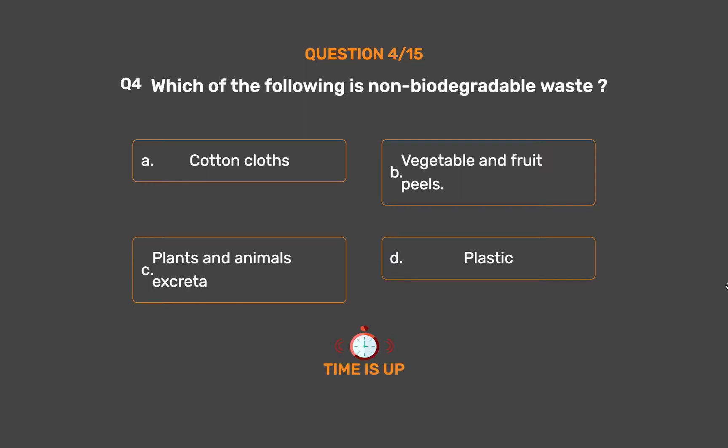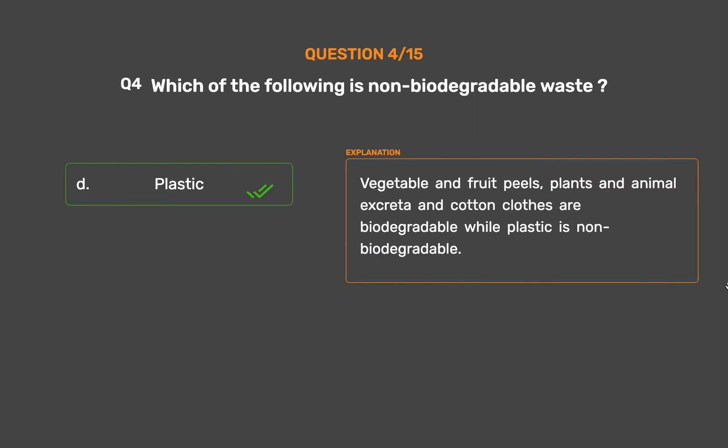The correct answer is Option D: Plastic. Vegetable and fruit peels, plants and animals excreta, and cotton cloths are biodegradable, while plastic is non-biodegradable.